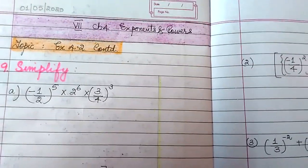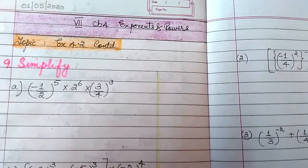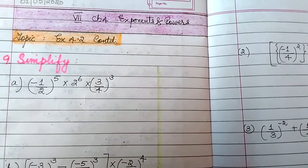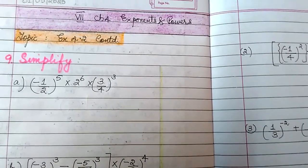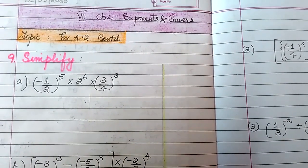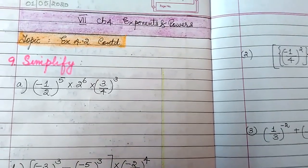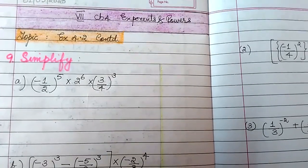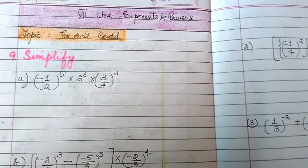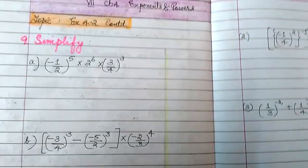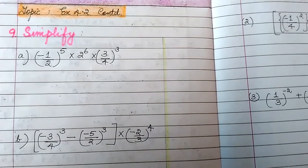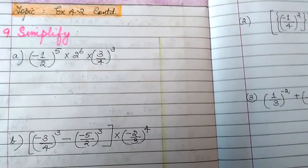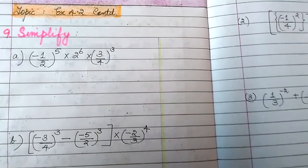Hello students. Yesterday we had done the first part of exercise 4.2 up to question number 8. Now we are going to continue from question number 9. Exercise 4.2, chapter: Exponents and Powers. So the first question for today is minus 1 by 2 to the power 5, into 2 raised to 6, into 3 upon 4 whole cube.